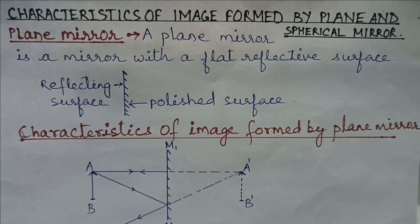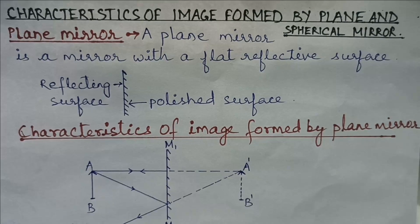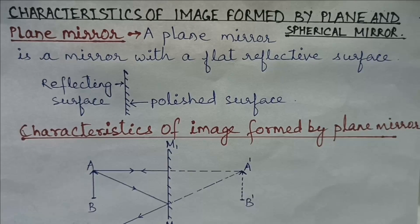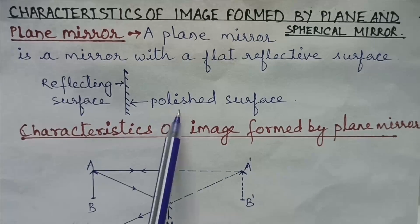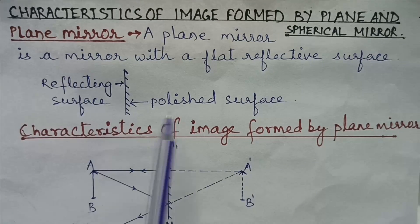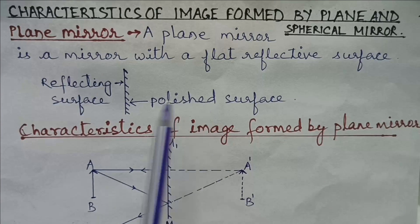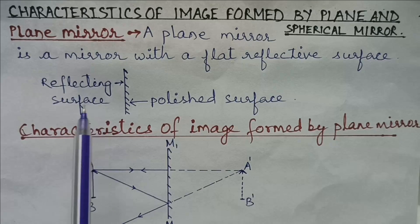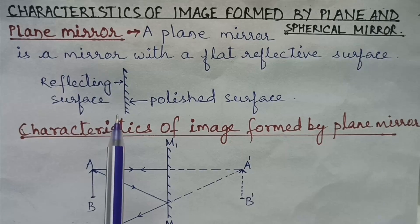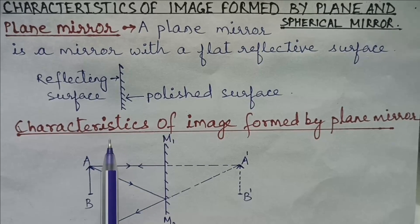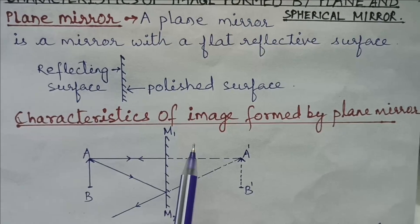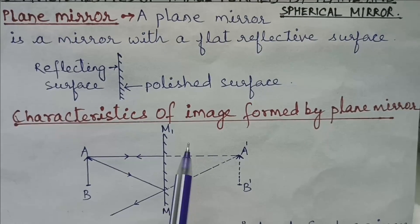What do you mean by plane mirror? It is a mirror with a flat reflective surface. It has two surfaces — one is the reflecting surface and the other one is the polished surface. The surface in which we see our image is the reflecting surface. Now let us see what are the characteristics of image formed by a plane mirror.